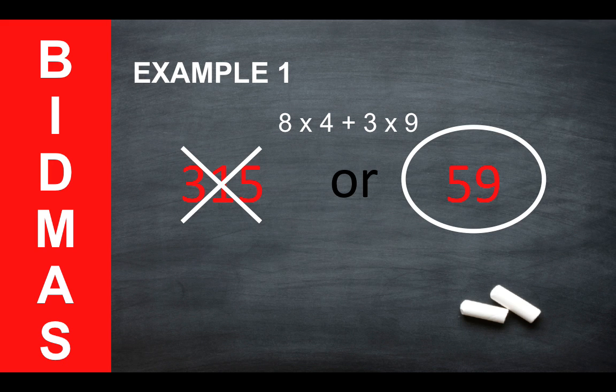Remember the order of operations, BIDMAS - multiplications come before addition. So you would do the 8 times 4 first, which would give you 32, and then the 3 times 9, which would give you 27. And then you would do the addition. So 32 plus 27 would give you 59.